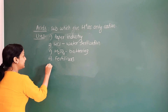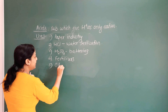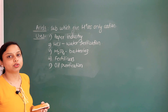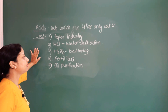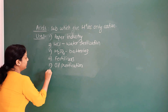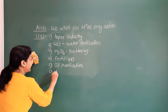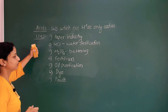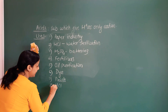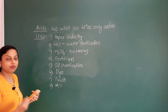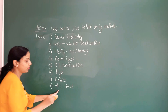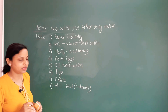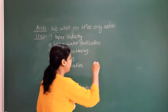Oil purification — in the process of separating crude oil, acids are used. Acids are also used in dyes and paints. HCl, hydrochloric acid, is used to make chloride salts. Sulfuric acid is used to make sulfate salts. Acids are also used in the manufacture of explosives.